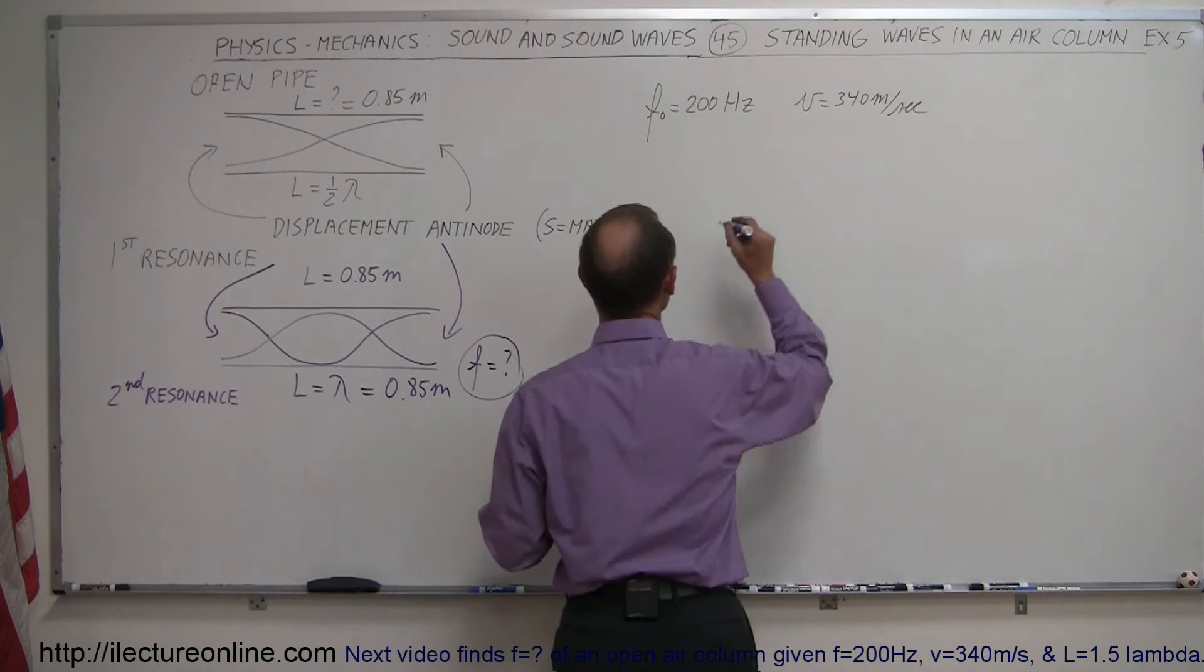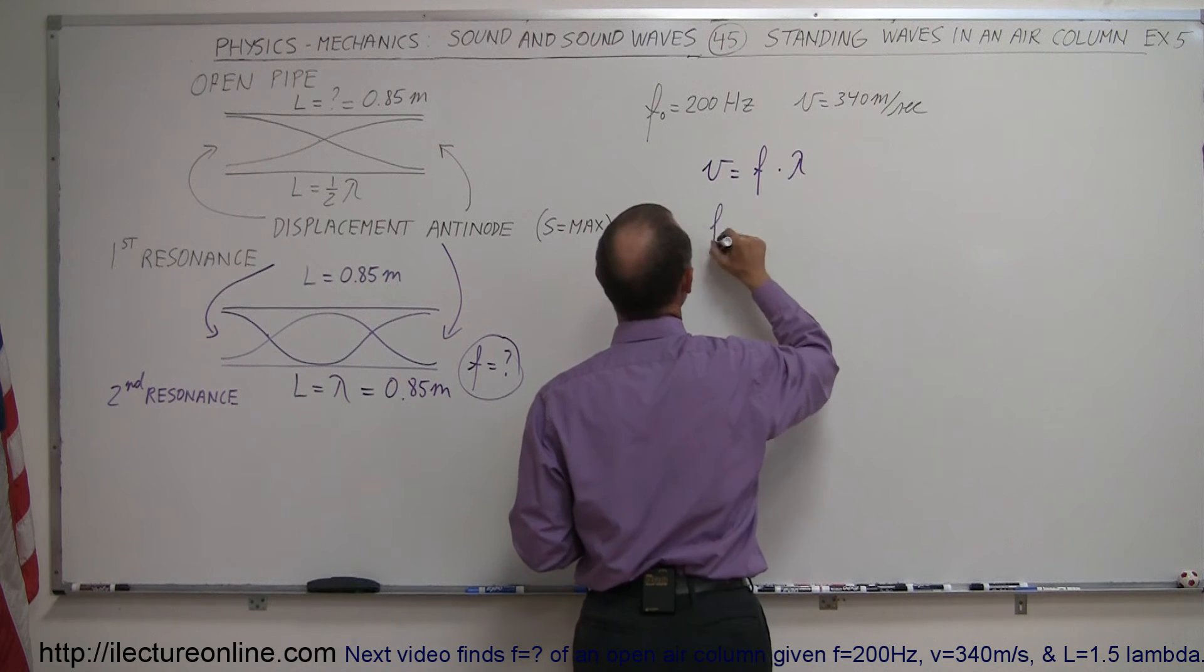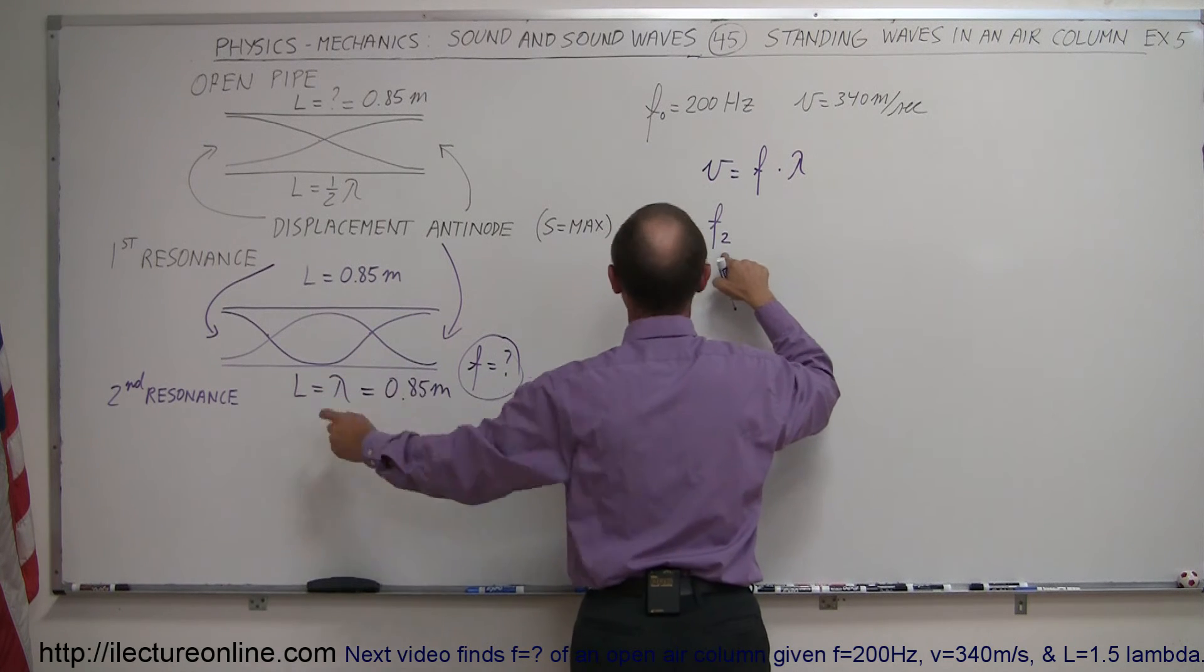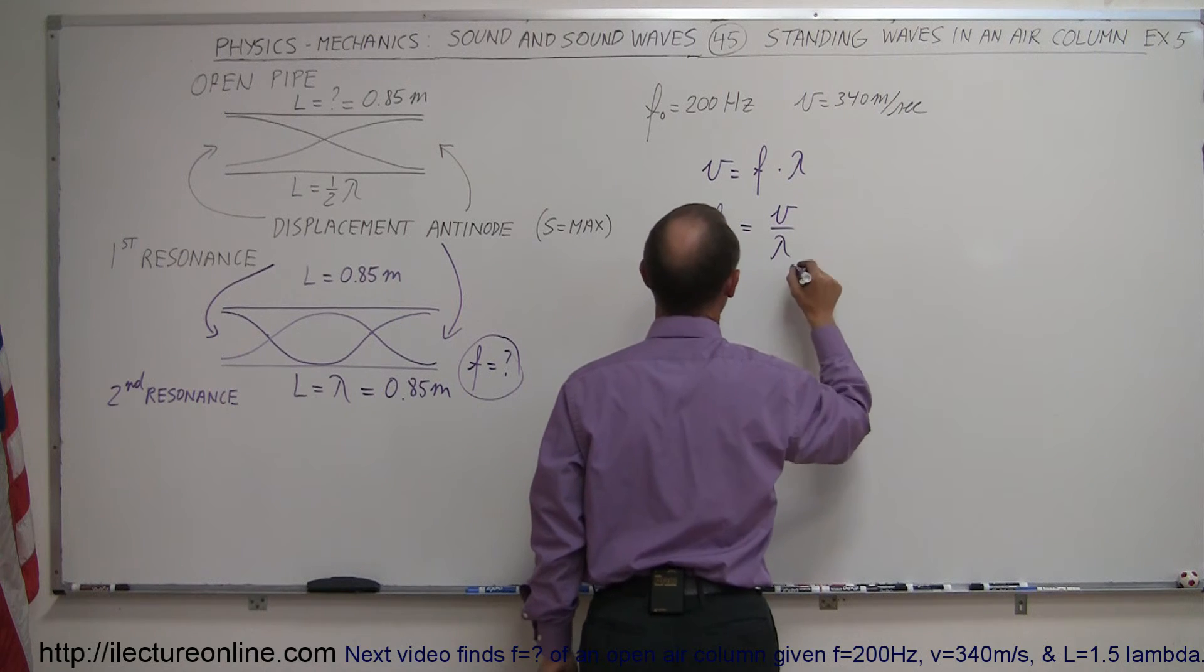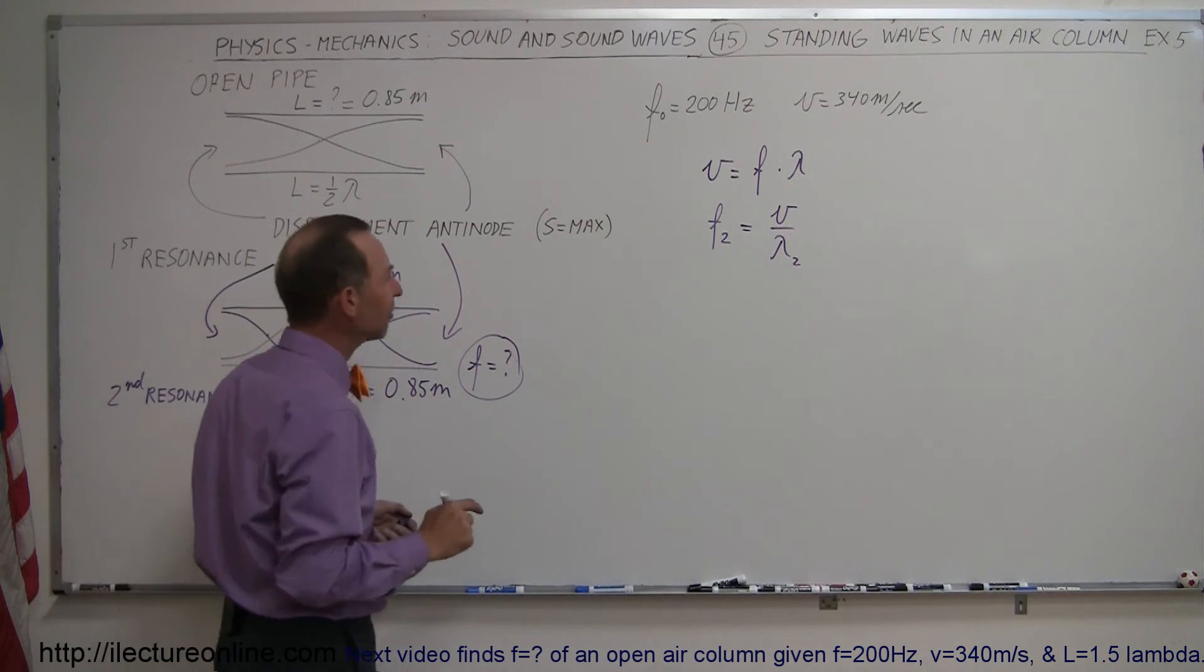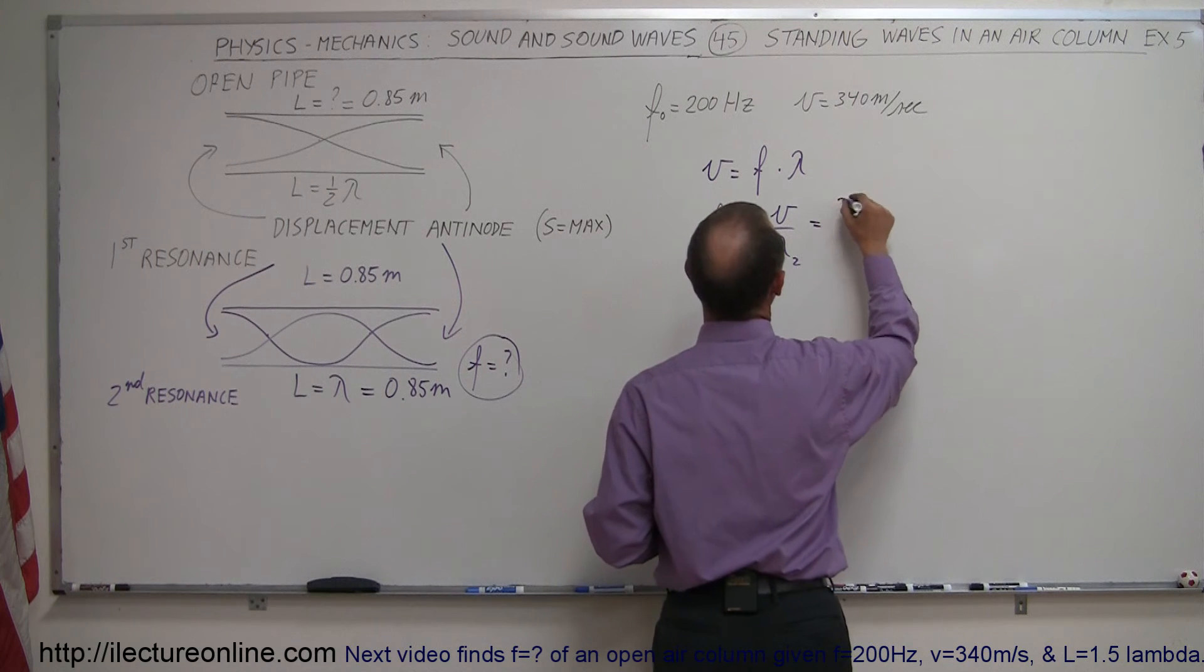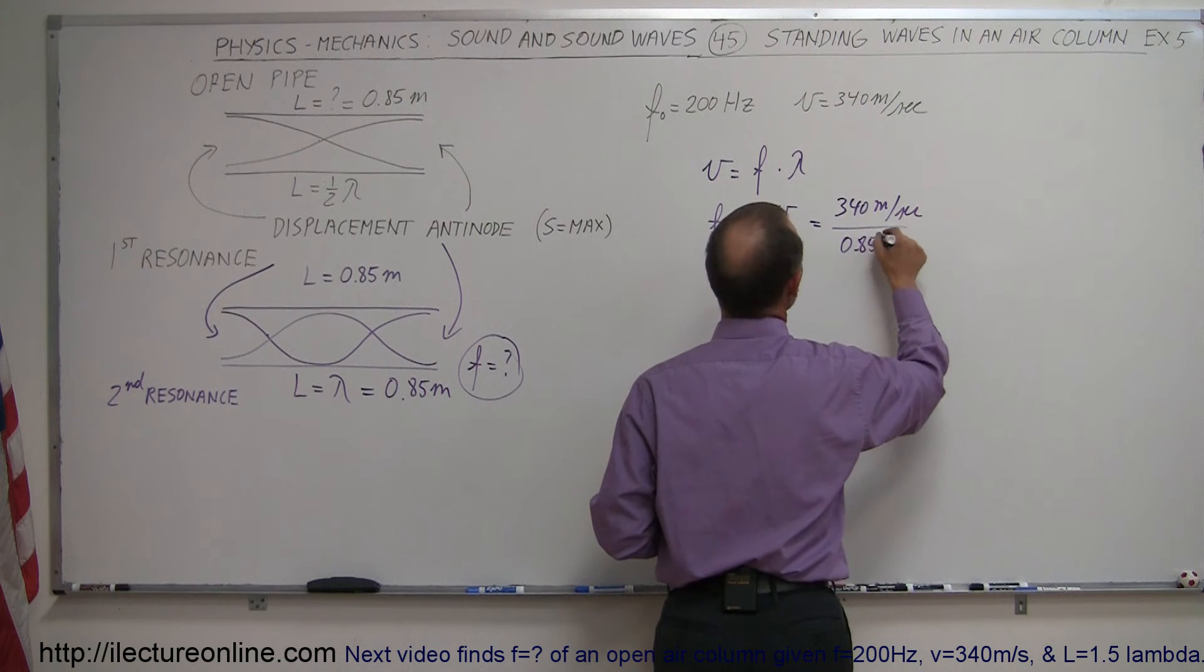Therefore, using the equation of velocity is equal to the frequency times the wavelength, frequency of the second resonance is going to be equal to the velocity divided by the wavelength of the second resonance situation, which is 0.85 meters, so this is equal to 340 meters per second divided by 0.85 meters.